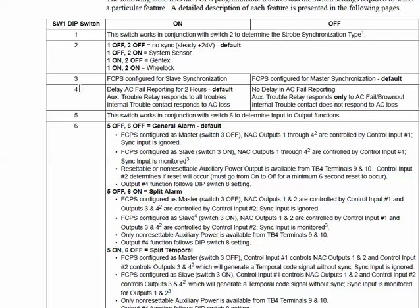First of all, look at number 3. If DIP switch 3 is set to on, then the FCPS is configured for slave synchronization. So that means it's going to follow your fire alarm panel, or whatever your trigger is.